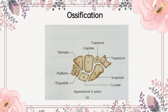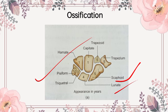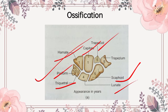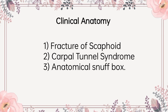Moving further to the ossification. Scaphoid ossifies at the fifth year, lunate at the fourth year, triquetral at the third year, pisiform at the twelfth year, hamate at the first year, capitate at the first year, trapezoid at the fifth year and trapezium also at the fifth year.